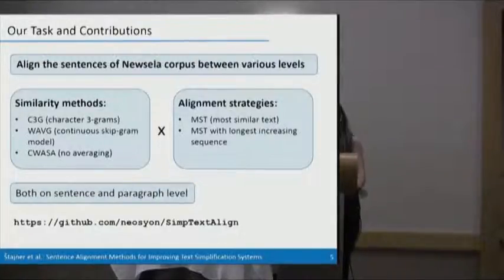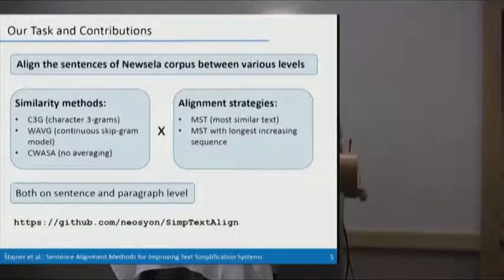So what we did, we focused on three similarity methods for calculating similarity between sentences. The first one is the character three-gram with log TF-IDF weighting. And the other two are based on word embeddings where in one of the approaches we average the vectors of all the words in the sentence and in the other one we use all the words in the sentence.